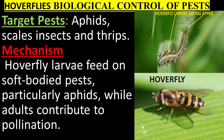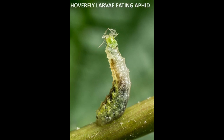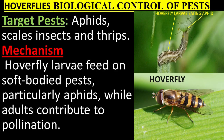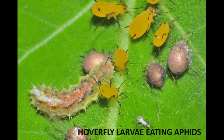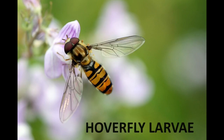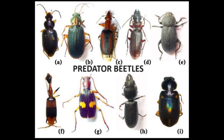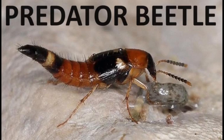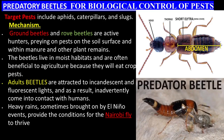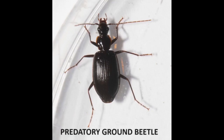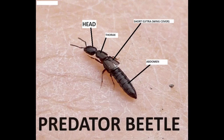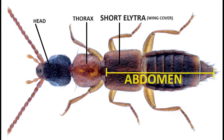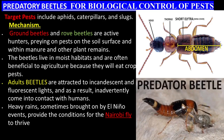Hoverflies: target pests include aphids, caterpillars, and slugs. Ground beetles and rove beetles are active hunters preying on pests on the soil surface and within manure and other plant remains. The beetles live in moist habitats and are often beneficial to agriculture because they will eat crop pests.